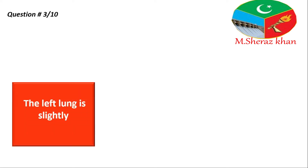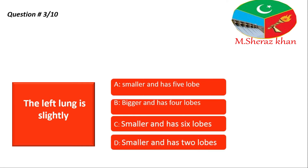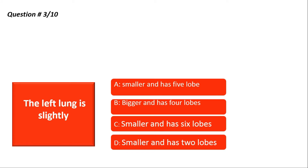Question number three: the left lung is slightly — yani ki aapke paas jo left lung hai wo thodi si kya hai? Four options are given: option A — smaller and has five lobes, option B — bigger and has four lobes, option C — smaller and has six lobes, option D — smaller and has two lobes. I give you ten seconds, then I share the right answer.